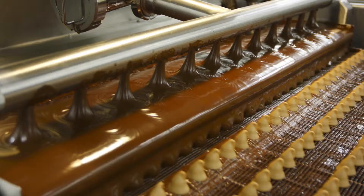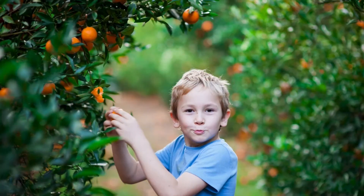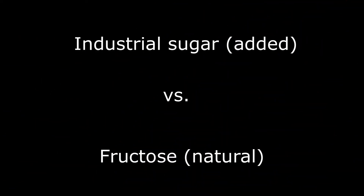Those two things are very different regardless of sugar content. One is produced in a factory with added industrial sugar and one grows on a tree without any added sugar. So what is the difference between fruit sugar or fructose and added sugar or industrial sugar?